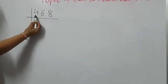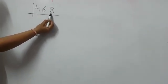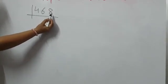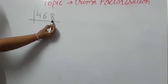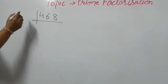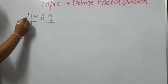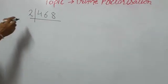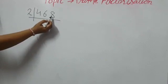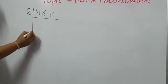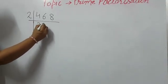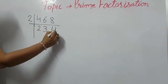Now our number is 468. It is an even number and its last digit is 8, which means it is divisible by 2. Now divide 468 by 2. It becomes 234.